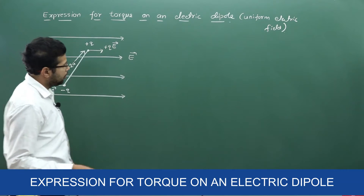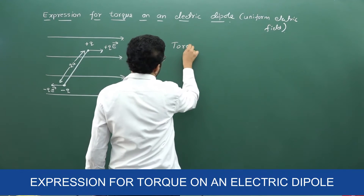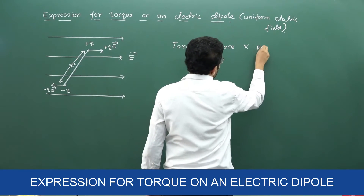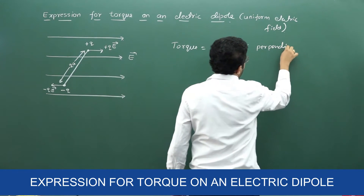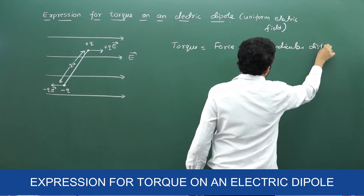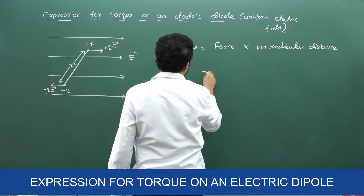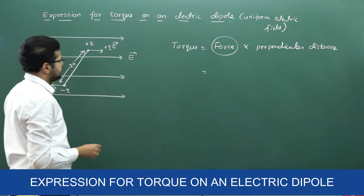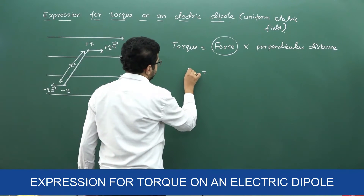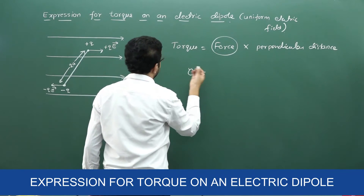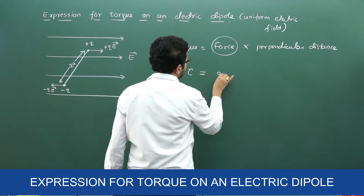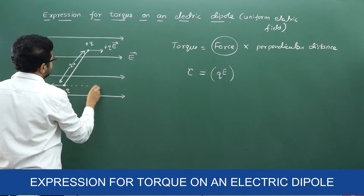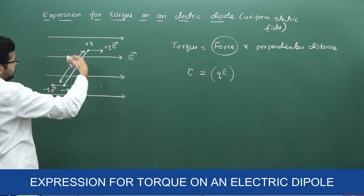So how do we calculate torque? Torque is equal to force into perpendicular distance — the magnitude of either force multiplied by the perpendicular distance. So torque tau is equal to QE into perpendicular distance. What is the perpendicular distance between the lines of action of the two forces?